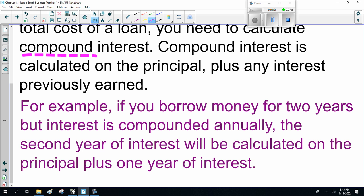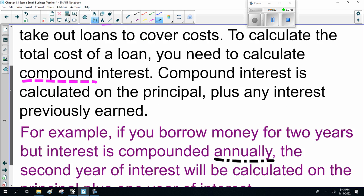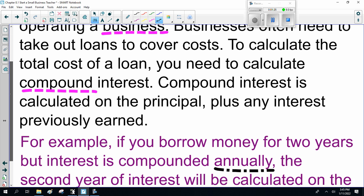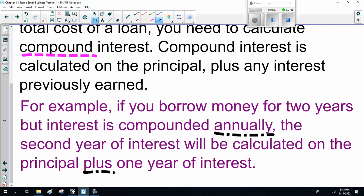Compound interest is calculated on the principal plus any interest previously earned. For example, if you borrow money for two years, but interest is compounded annually, the second year of interest will be calculated on the principal plus one year of interest. You pay interest on the interest.